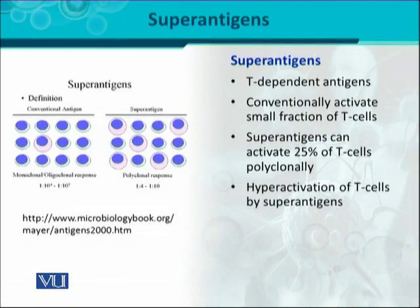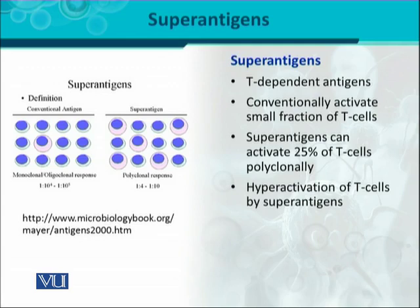This figure shows a comparison between conventional antigens and super antigens. In the left panel, there are conventional T-cell dependent antigens. In a conventional way, they activate T-cells in a monoclonal or oligoclonal response — mono meaning a single clone, or oligoclonal meaning more than one or two clones are activated.